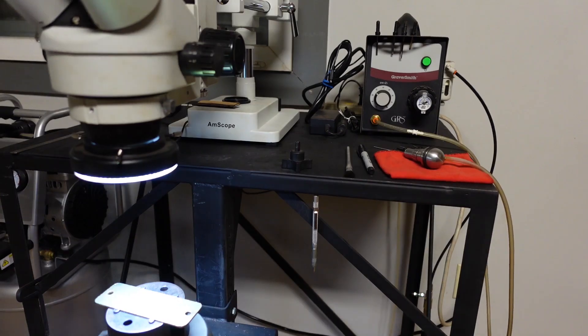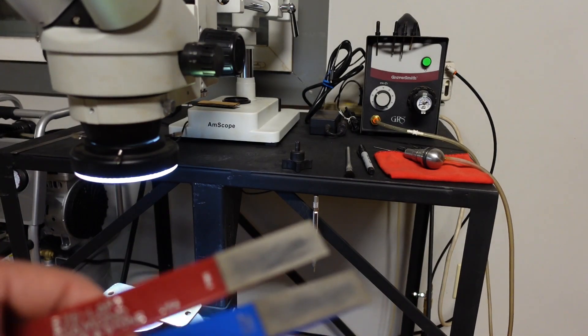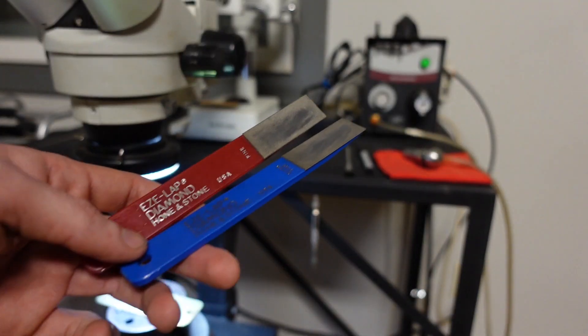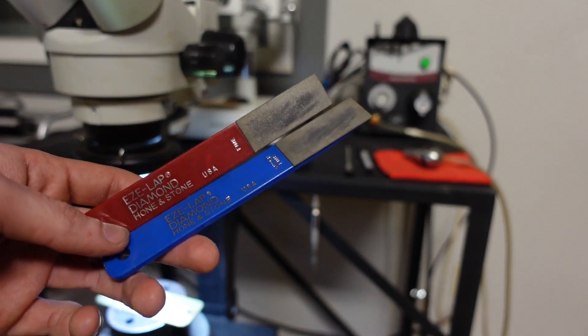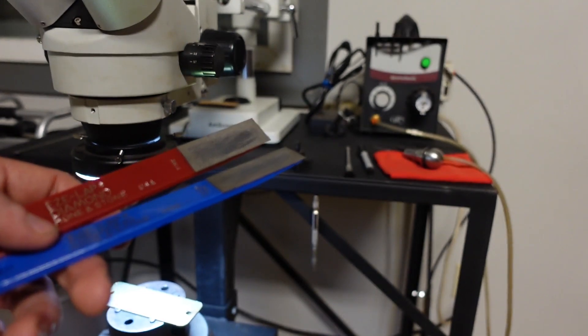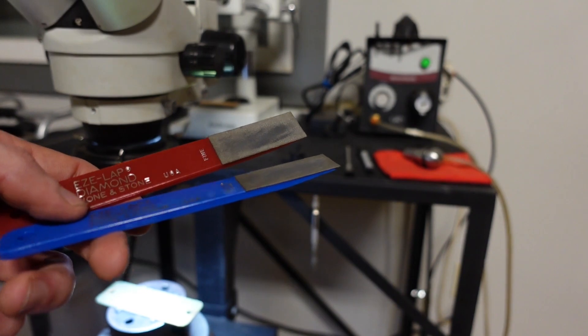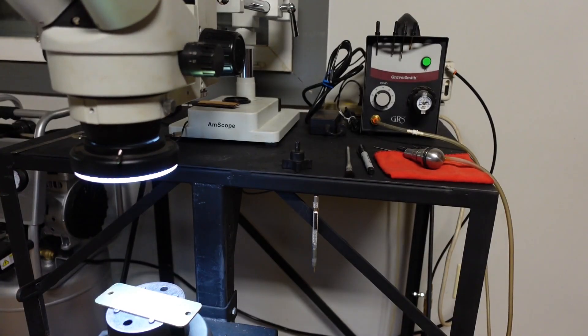Some other tools that are useful are sharpeners. This is EZE-LAP diamond hone and stone. I got these off of Amazon. They're diamond-grained steel plates that allow you to sharpen tungsten carbide gravers. These are very cheap and work extremely well for sharpening by hand. They make electric sharpeners with stands, but those cost a lot of money, and I just don't engrave enough to need one. If you were engraving all day long, I would say it would be useful.